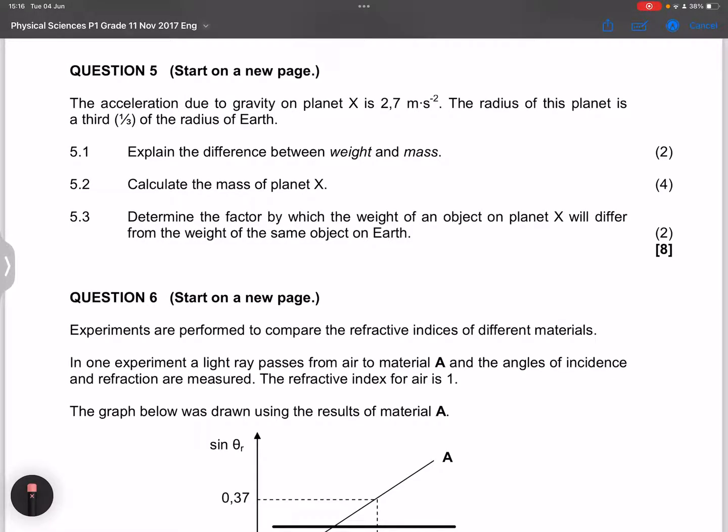And so we go on to question five. They say the acceleration due to gravity on planet X is 2.7 meters per second squared. And the radius of this planet is a third of the radius of the Earth. Firstly, they say explain the difference between weight and mass.